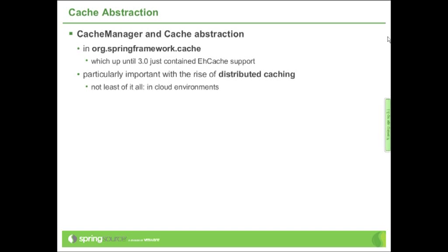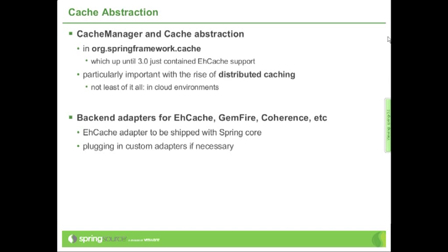Spring's cache abstraction allows uniform access to any caching infrastructure from a Spring-based application using CacheManager and Cache API types. An abstraction is only as good as its backend implementations. EhCache is an important backend that we ship with Spring core, so it comes with Spring 3.1. The big benefit of the abstraction is that it allows plugging in custom adapters, some of which we ship in sibling projects like the Spring GemFire project, and some will be provided by third parties.